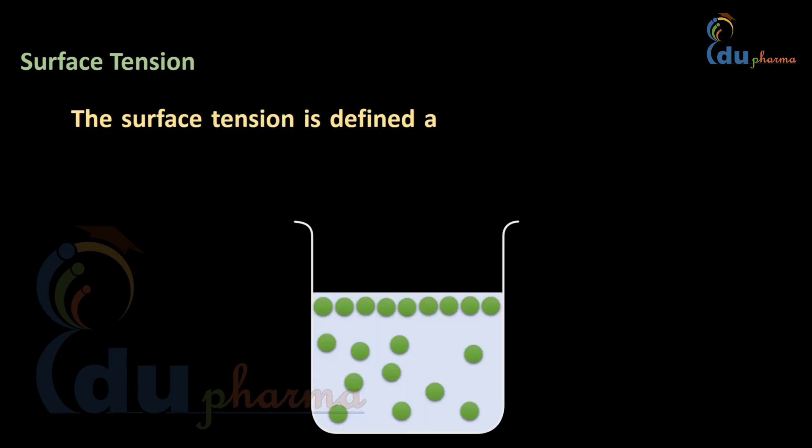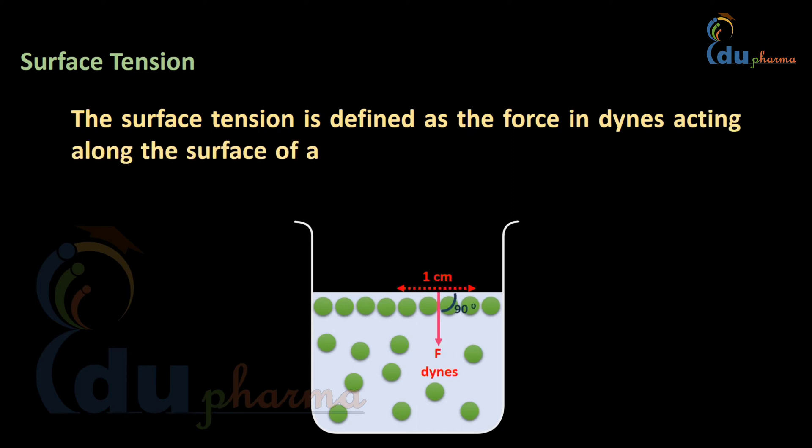Let's talk about surface tension. Any tension exerting on the surface is called surface tension. Surface tension of any liquid is defined as the force in dynes acting along the surface of a liquid at right angle to any line one centimeter in length.